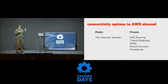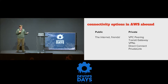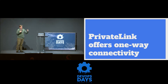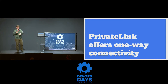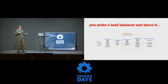Imagine that you're trying to expose something you've built in AWS to the outside world. You could use the internet. If your compliance requirements or something else prevents you from doing so, you might use one of these options on the right here. PrivateLink is one of the newest of these options, and it's unique among them. It provides one-way communication between a source and a destination in AWS.